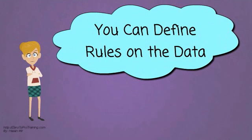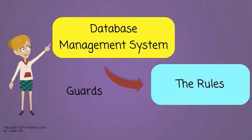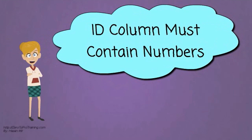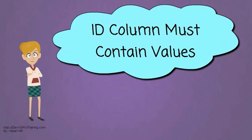You can impose rules on the data by defining what kind of values these columns will contain. Once the rules are set, the database management system will not let us violate the rules. If it is defined that the id column of employee table will contain numbers, then we cannot create a new row that has text value in id column. If it is defined that the id column of employee table must have values, then we cannot create a new row that has no value in id column.